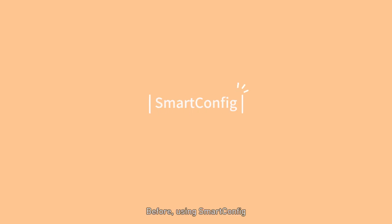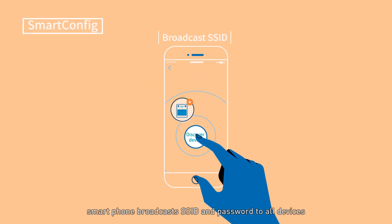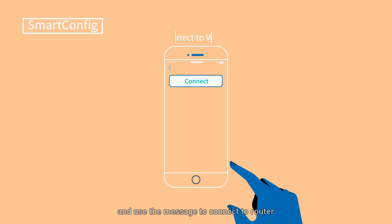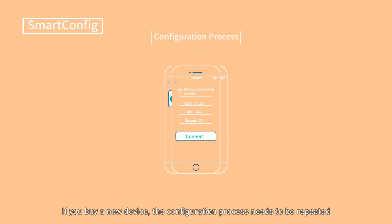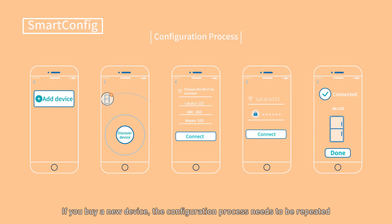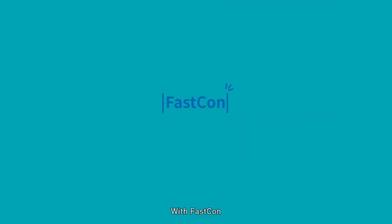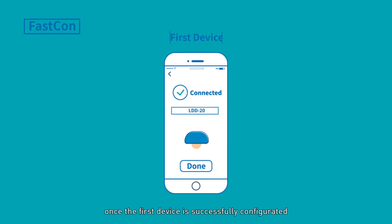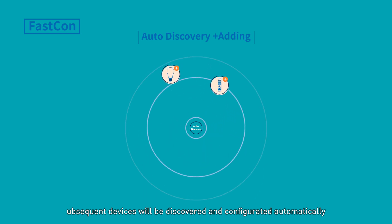Before, using smart config, the phone broadcasts the SSID and password to all devices, and only the right device can understand and use the message to connect to the router. If you buy a new device, the configuration process needs to be repeated. With FastCon, once the first device is successfully configured, subsequent devices will be discovered and configured automatically.